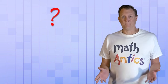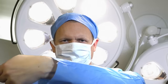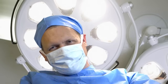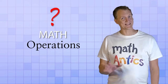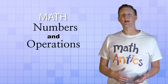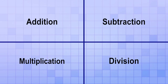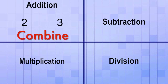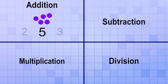But what does that mean — math operations? Math involves both numbers and operations, and the operations just tell you what to do with the numbers. For example, the addition operation tells us to take two numbers and to combine their values. If we add the amount 2 and we add it to the amount 3, we end up with the amount 5. That's addition — it combines two amounts.